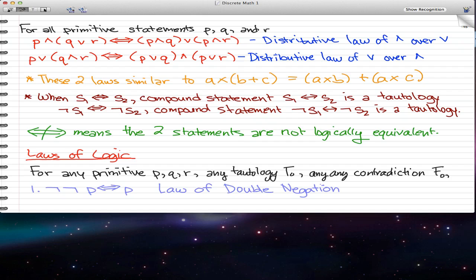So if we have two negated symbols and a p, then that's pretty much logically equivalent to p. And that is called the law of double negation.